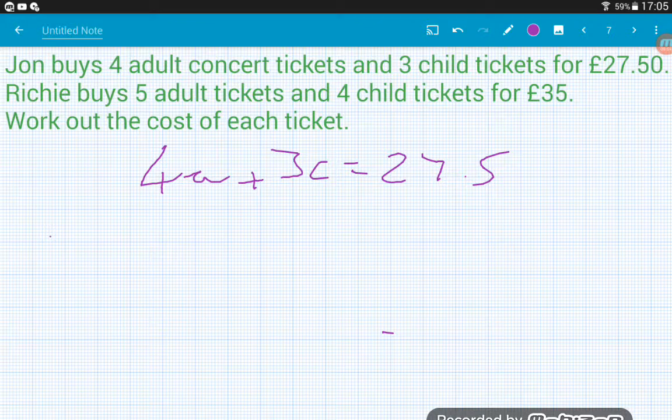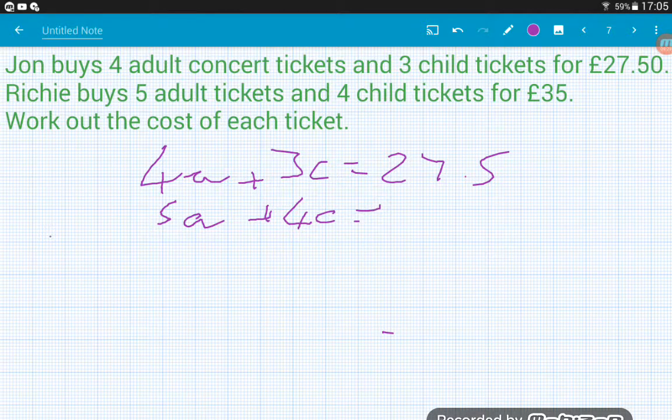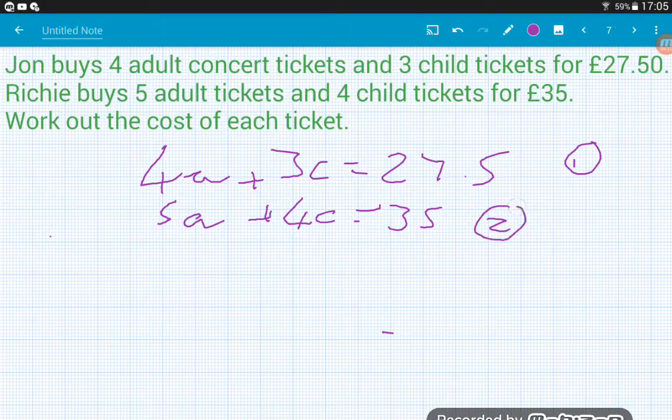So the first sentence, we could write as 4A add 3C and that's equal to 27.5. Now notice that I haven't chosen to write that in terms of pounds right here, right now. I always find it's a good idea to keep your notation as simple as possible. Just remember that at the end, we are working out how much we have cost. So put your answer in terms of pounds at the end. Another reason is that I try to think what my pound sign is going to look like using a stylus. So that's the first sentence put into an equation and then Richie buys five adult tickets and four child tickets and that costs him £35. So we've got equation one, and we've got equation two.